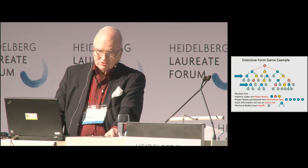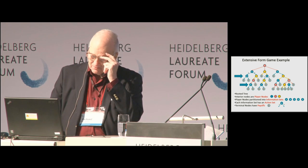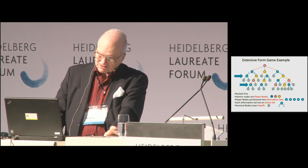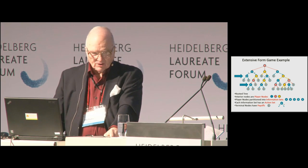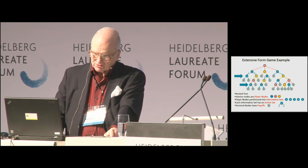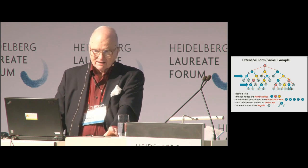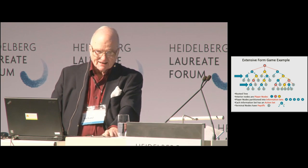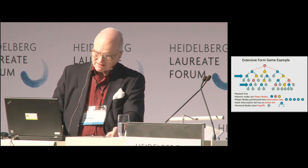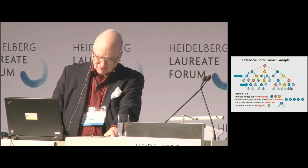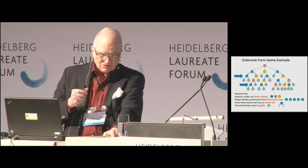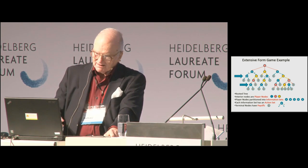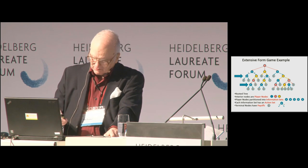Notice these two nodes in information set B. When the player is in information set B, he doesn't know what he did above at A — he doesn't know whether he went left or whether he went right. So he has forgotten what he did. This is an example of not having perfect recall. Perfect recall means remembering at least what you did, and in this case blue does not remember what he did.